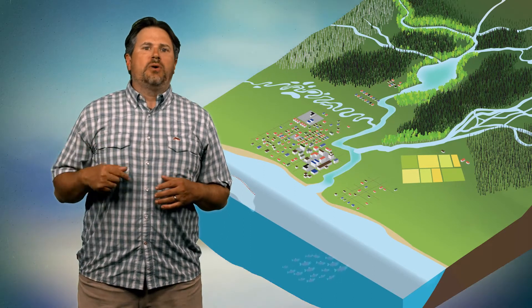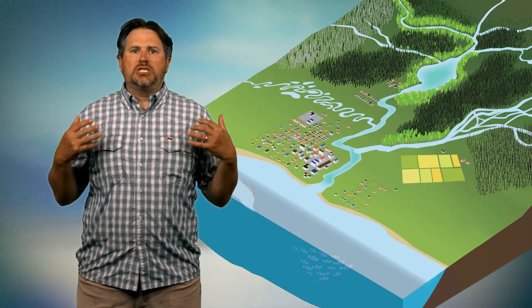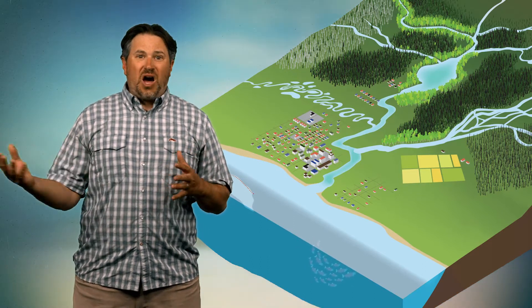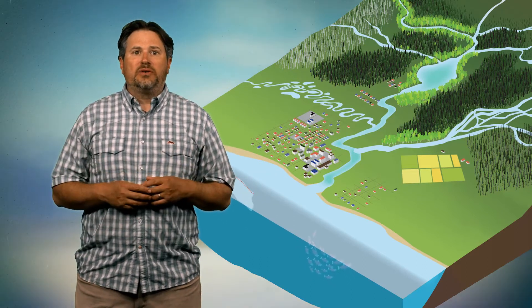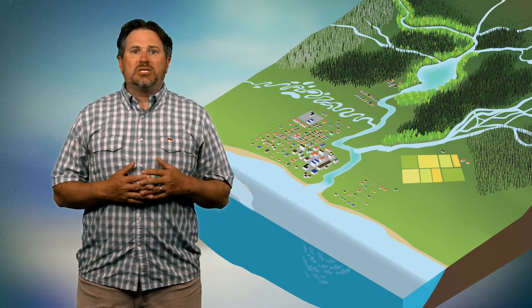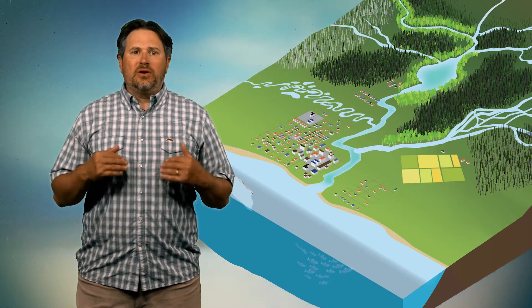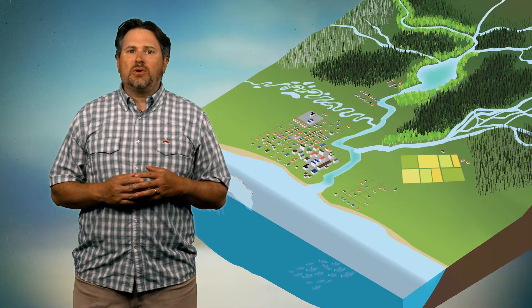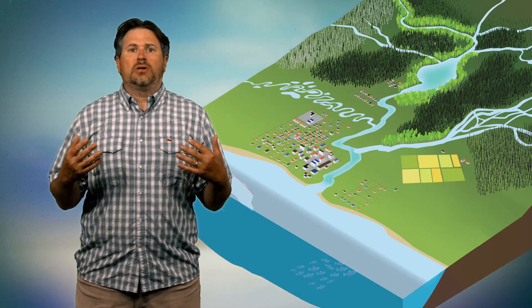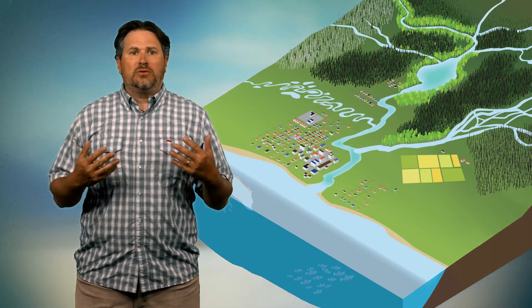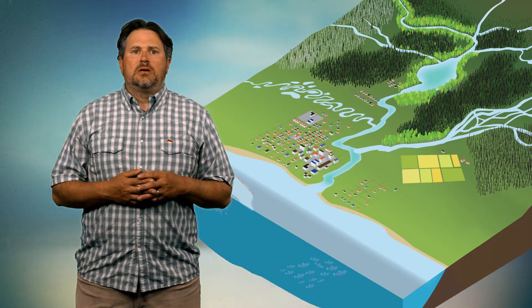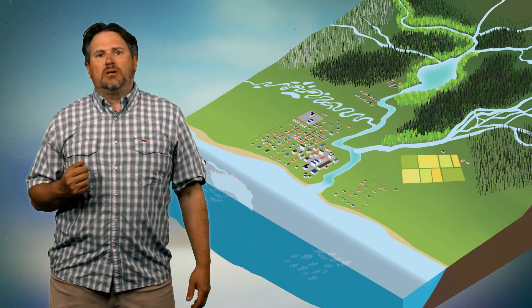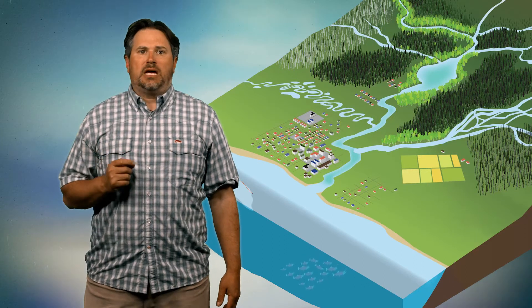Cutting down trees changes the flow of water into the streams, changes the flow of sand and rocks from the land into the river, and of course it changes the water temperature in the rivers by removing the shade of the trees that would otherwise have bordered these small streams and rivers. So the second way in which humans directly interact with salmon is by modifying their habitat.